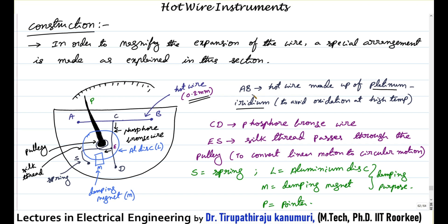AB is the hot wire made up of platinum iridium, used to avoid oxidation at high temperature. CD is the phosphor bronze wire, and ES is the silk thread which passes through the pulley. Because it is connected through the pulley, the linear motion is converted to rotational motion and the pointer will move. The spring S and the aluminum disk combined with the damping magnet provide the required damping torque. P is the pointer.